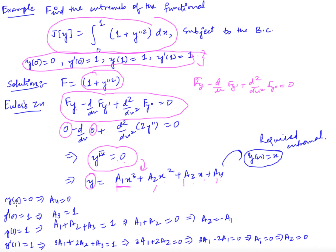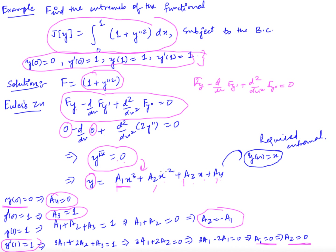Integrating y^(4) = 0 four times gives y = a_1x³ + a_2x² + a_3x + a_4. Using the boundary conditions: y(0)=0 gives a_4=0; y'(0)=1 gives a_3=1; y(1)=1 gives a_2 = −a_1; y'(1)=1 gives a_1=0 and then a_2=0. Therefore the extremal is y(x) = x. Thank you.